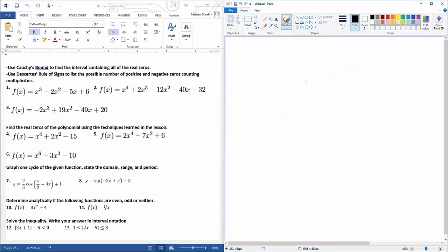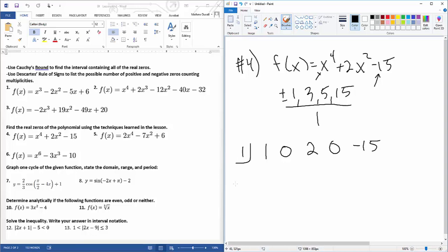Number four says find the real zeros of the polynomial using the techniques learned, so those are p's over q's. f(x) equals x to the fourth plus 2x squared minus 15. My possible p's are plus or minus 1, 3, 5, and 15, all over 1. So now listing them out: one, zero x cubed, two x squared, zero x, minus 15. Let's try positive one. I don't think it's gonna work though. Bring it down, multiply, add, multiply, add, multiply, add. Nope.